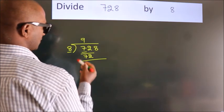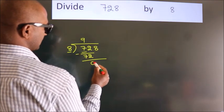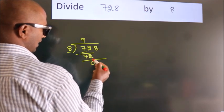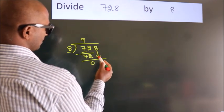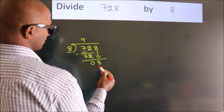Now we should subtract, we get 0. After this, bring down the beside number. So 8 down, so 8.